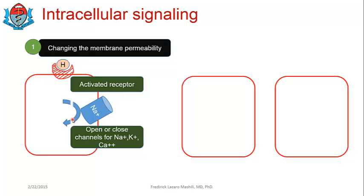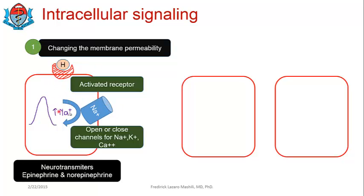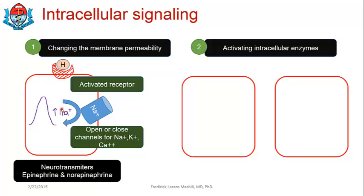Taking the example of changes in sodium permeability: you have an influx of sodium into the cell, which leads to generation of an action potential. Once you have an action potential, you have cellular processes happening — for example, impulse conduction or muscle contraction. Good examples of hormones that utilize this system are epinephrine and norepinephrine. Neurotransmitters also act through this way, changing the post-synaptic membrane permeability to ions, producing a biological response.